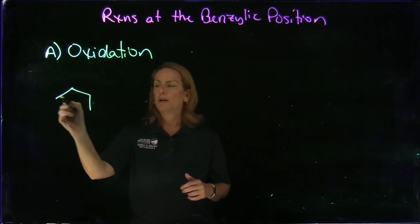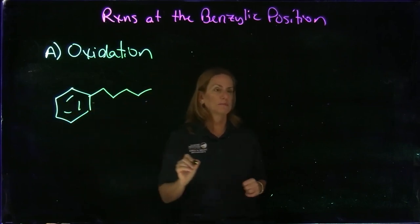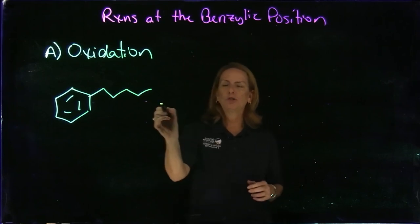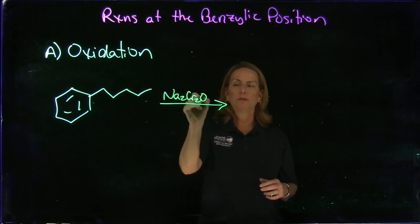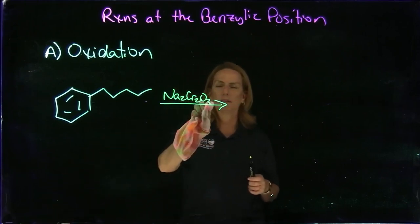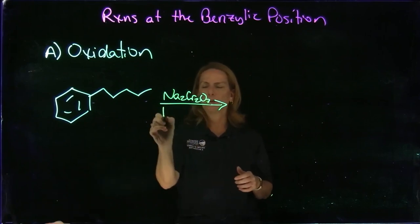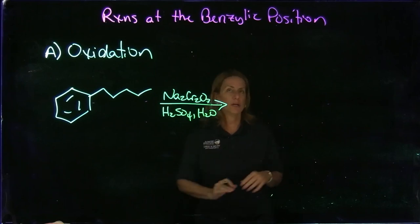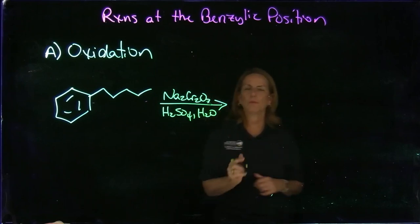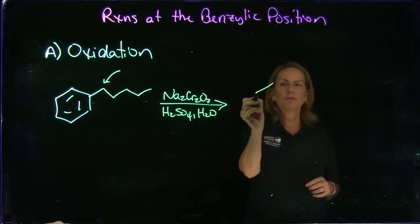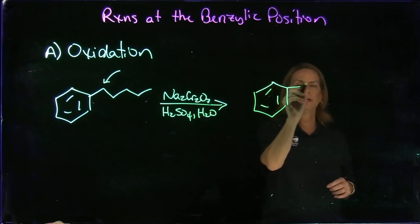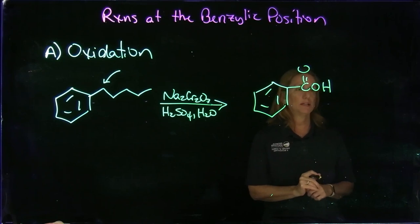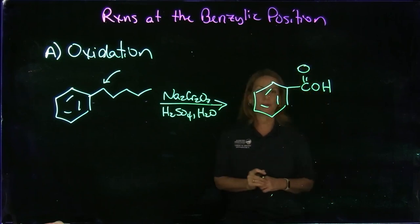In oxidation, a benzene that has an alkyl chain — generally it doesn't matter how many carbons there are, there just has to be a proton there. We can oxidize that using sodium dichromate as our oxidizing agent. Potassium permanganate also works, along with some other oxidizing agents. The reaction occurs at the benzylic carbon, directly next to the benzene ring. Regardless of the carbon chain length, you will get a carboxylic acid — you oxidize completely to the carboxylic acid, making a benzoic acid compound.